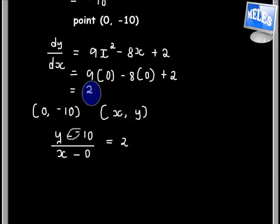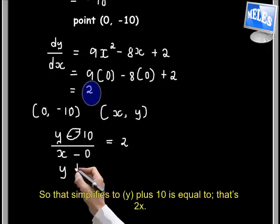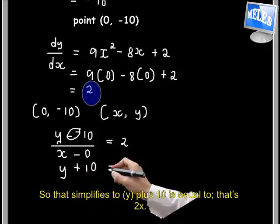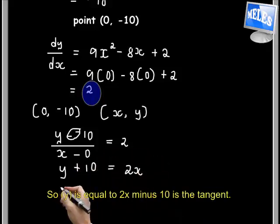That simplifies to y plus 10 equals 2x, so y equals 2x minus 10 is the tangent.